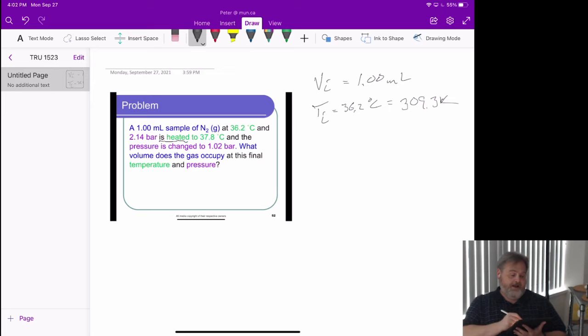We also have a pressure initial, and that is 2.14 bar. And our last state variable initial is an amount of gas that, well, we don't know.